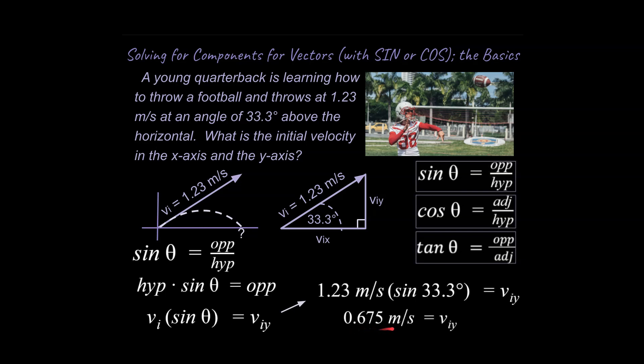And so it turns out that this v initial in the y is quite a bit less than 1.23. It's around actually a little more than half. So just keep in mind that that actually makes sense. This angle is not huge right here. So it makes sense to say that our initial velocity in the y-axis would not be as large as the overall initial velocity.